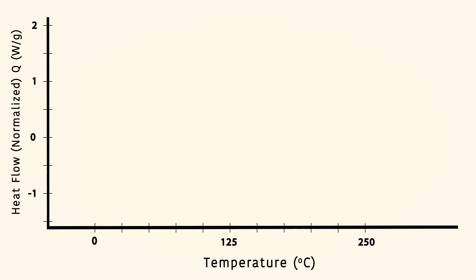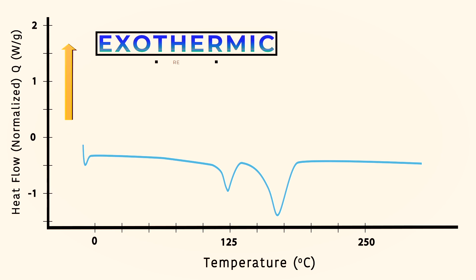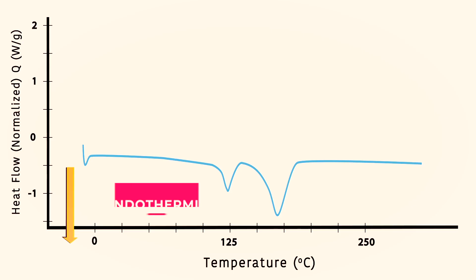The DSC curve consists of the heat flow in the y-axis versus temperature in the x-axis. The graphs that are plotted are particular to the instrument that you use. In our case, the positive side of the y-axis corresponds to exothermic reactions whereas the negative side of the y-axis corresponds to endothermic reactions.